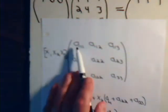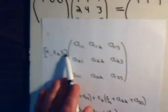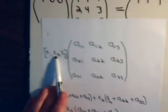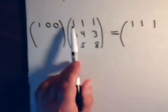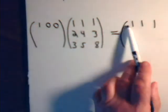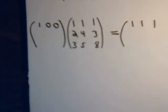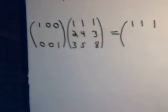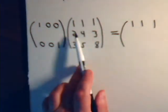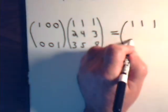Just as we demonstrated: 1 times this row, plus 0 times this row, plus 0 times this row gives us just the first row. We also want the third row to be unchanged, so down here it would be 0, 0, 1 — meaning 0 times the first row, plus 0 times the second row, plus 1 times the third row, giving us the third row.